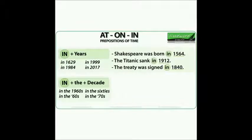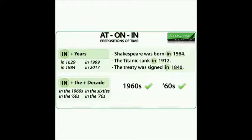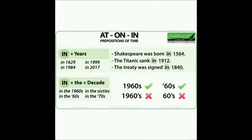The preposition 'in' is also used with decades. A decade is a period of 10 years. We say: in the 1960s, in the 60s. Notice how an apostrophe is used at the beginning to replace the '19' part. You can also write the decade as a word: in the 60s, in the 70s. Notice how we use the article 'the' before the decade. We do not put an apostrophe between the number and the final S.